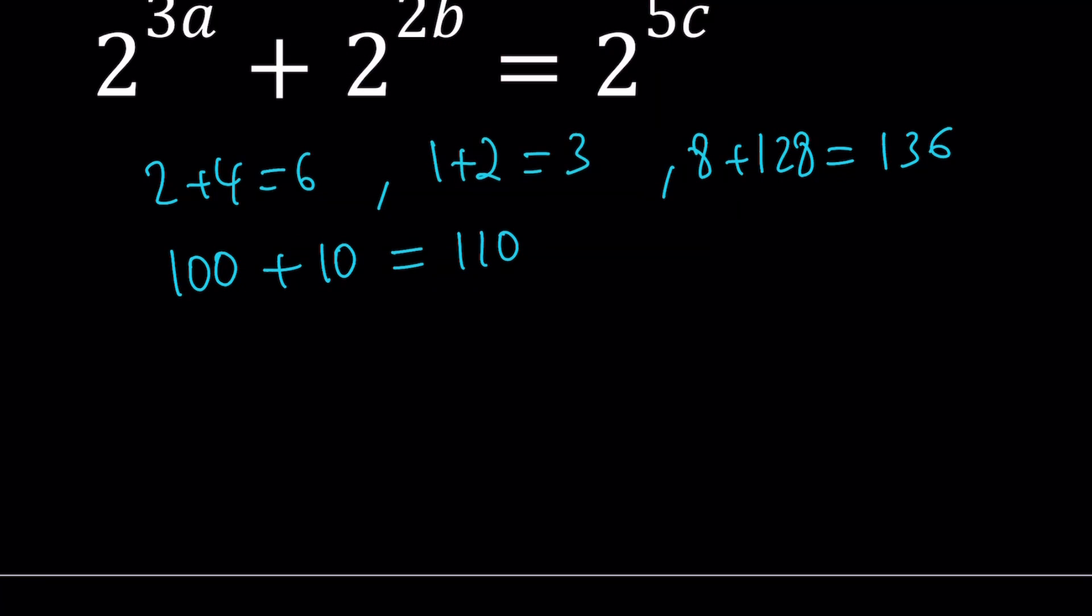So now, suppose you have two numbers x and y and let x be greater than y. And suppose you have this following sum, 2 to the power x plus 2 to the power y. I'm just going to show you why you're not going to get a power of 2 by adding two different powers of 2. So since y is smaller, we can go ahead and take out 2 to the power y here. And that's going to give us 2 to the power x minus y plus 1.